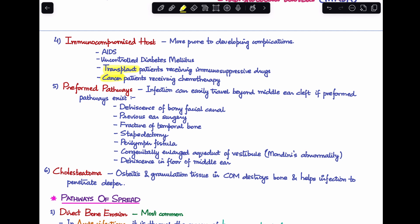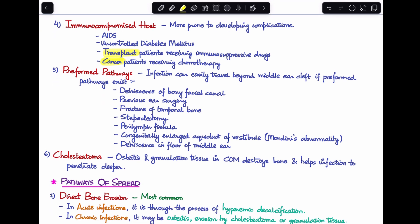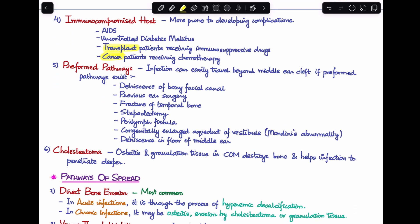In all of these cases, the immunity of the patient is much lowered. That is why they are more prone to developing complications. Fifth factor here is the presence of preformed pathways. Now infection can easily travel beyond the middle ear cleft if there are certain preformed pathways. For example, if there is a dehiscence of the bony facial canal, or if there has been a previous ear surgery, for example stapedectomy or fenestration operation, if there is a fracture of temporal bone, stapedectomies I already mentioned, perilymph fistula, Mondini's abnormality, even dehiscence in floor of middle ear.